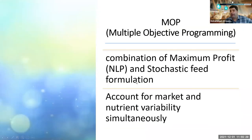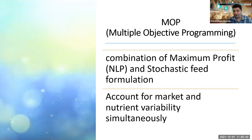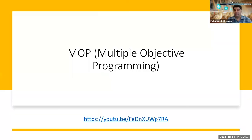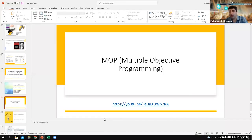The final method is MOP, or multiple objective programming. It is the combination of maximum profit feed formulation and stochastic feed formulation — you're catching more goals at once, accounting for both market variability and nutrient composition variability simultaneously. If you want to develop your own spreadsheet, feel free to visit the tutorial video where I explain it from scratch with a blank spreadsheet.